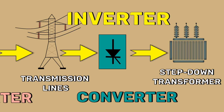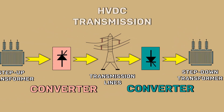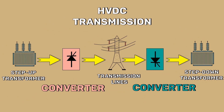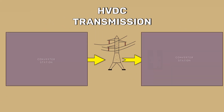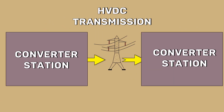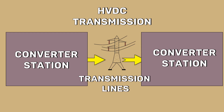This is the basic outline of HVDC. HVDC has two converter stations and transmission lines. Now, let's see more about these converter stations.